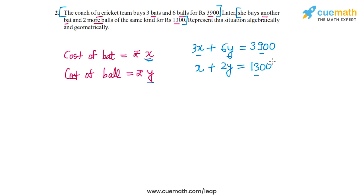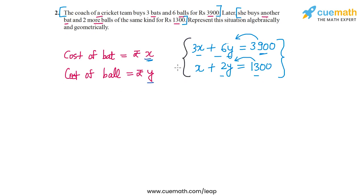The given situation can be modeled as this pair of linear equations. The first one is 3x + 6y = 3900, or equivalently 3x + 6y − 3900 = 0. The second equation is x + 2y = 1300, or x + 2y − 1300 = 0. This pair of equations is the algebraic representation of the given situation.